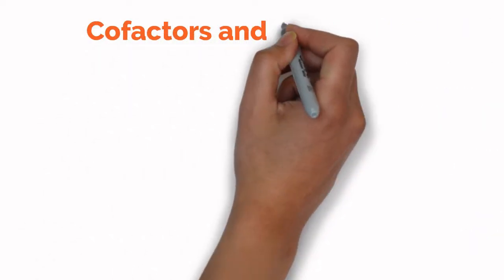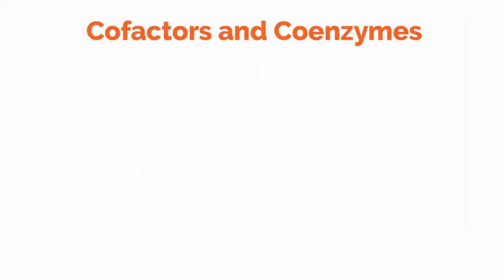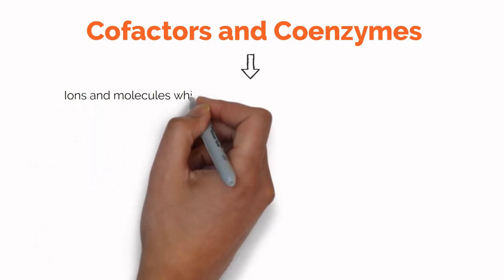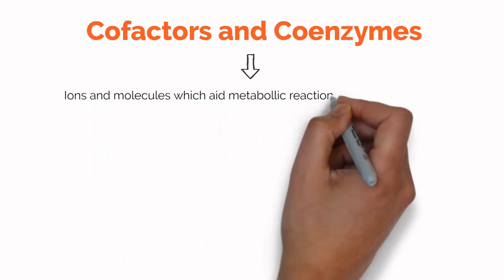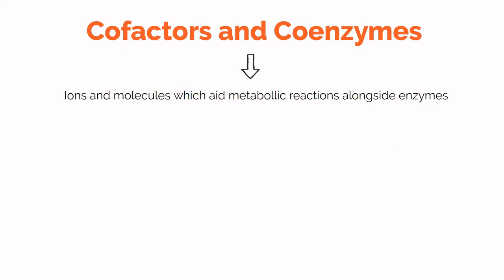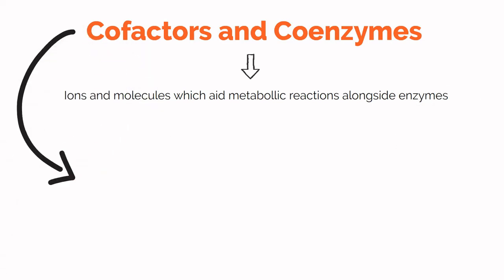Now let's talk about cofactors and coenzymes. These are ions and molecules such as magnesium, copper, iron, and zinc — the minerals covered in the last video — and they aid metabolic reactions alongside the enzymes.